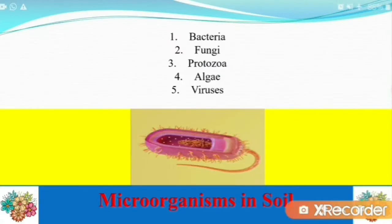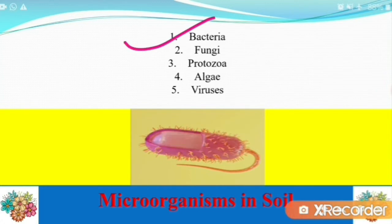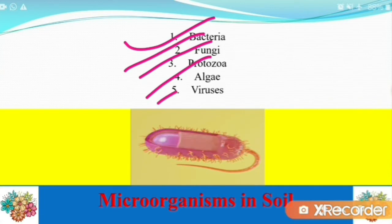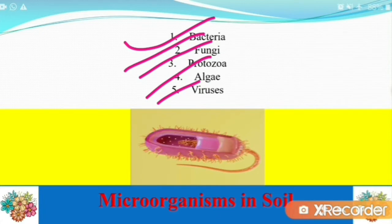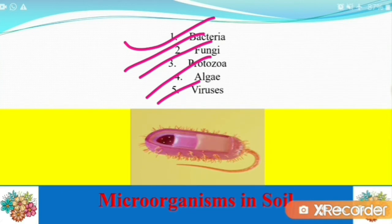The microorganisms in soil — we know that microorganisms are found everywhere, present in air, water, and different sources, and they are also present in the soil. The five types mainly involved in soil are bacteria, fungi, protozoa, algae, and viruses. It seems obvious that microorganisms are present in the soil because they require food, and food is present in the soil. Soils are excellent culture media for the growth of many types of microorganisms.